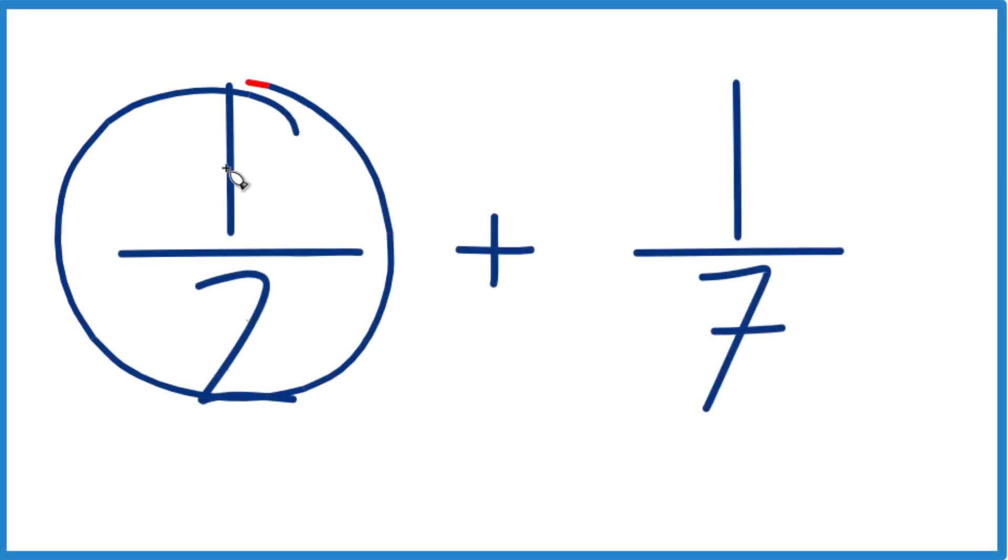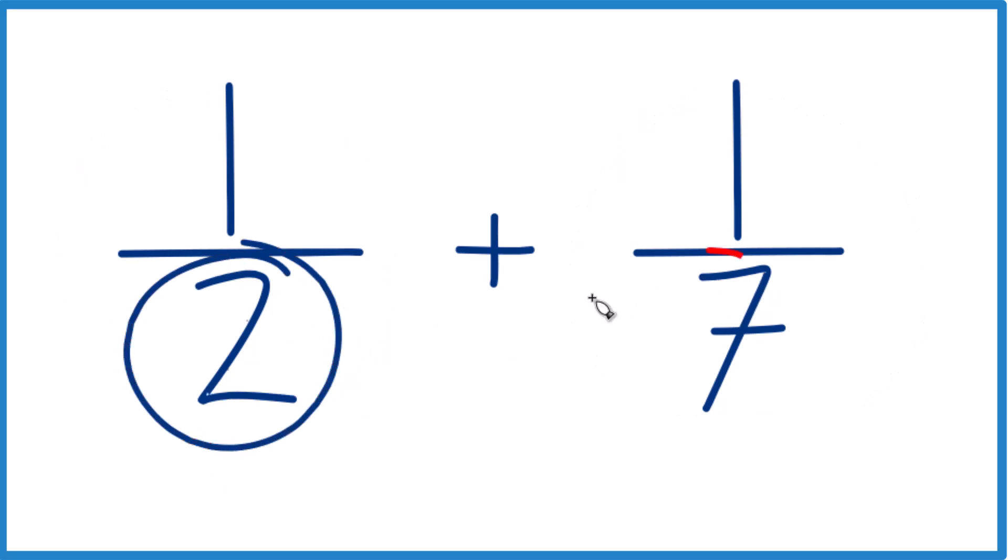In this video we're going to add 1 half plus 1 seventh. Here's how you do it. What we want is to have the same denominator for both fractions because then we just add the numerators and we're done.